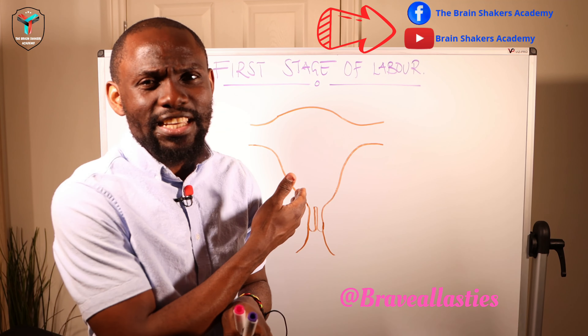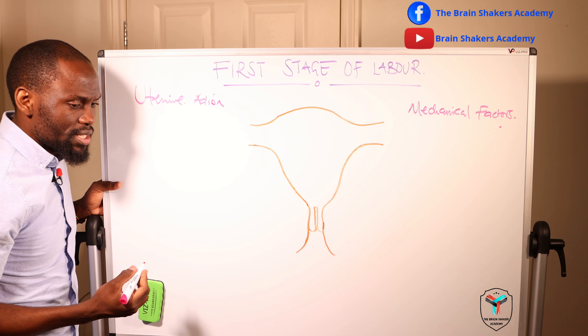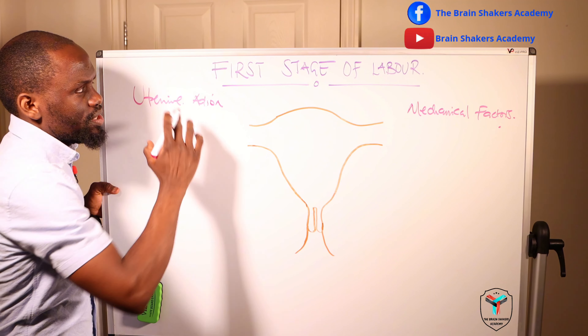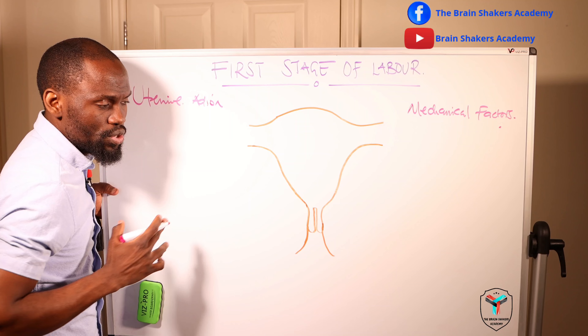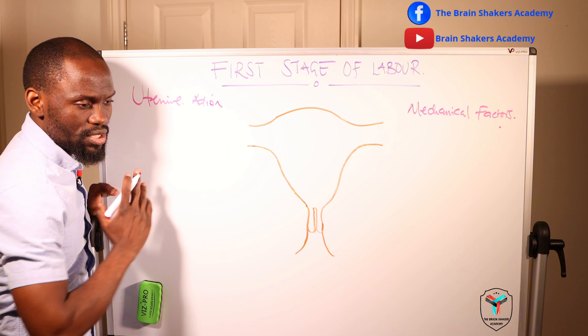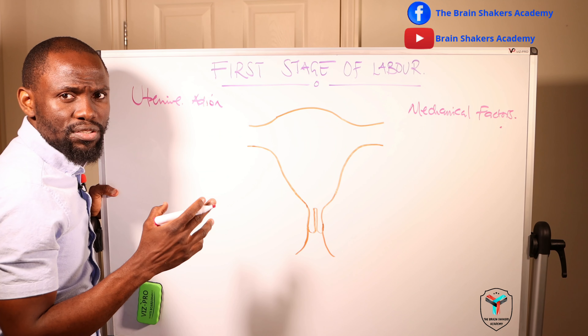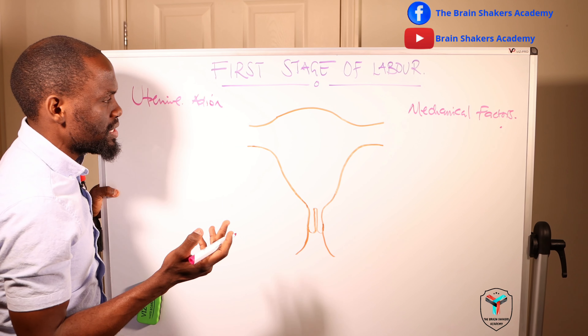With the physiology of the first stage of labor, we have what is known as uterine action, and we also have other factors that we are going to classify as mechanical factors. As we look at uterine action, what is happening within the uterus for the first stage to culminate into that transition from the onset of regular rhythmic uterine contractions to about 10 centimeters dilation?